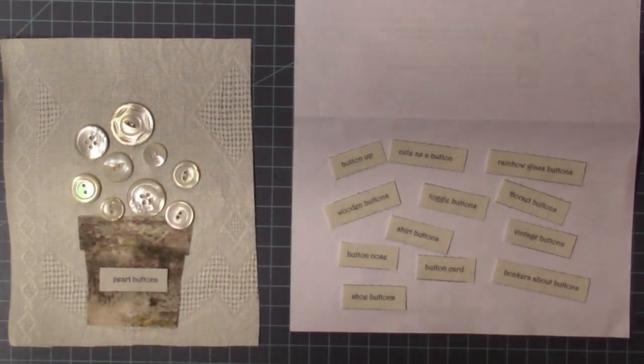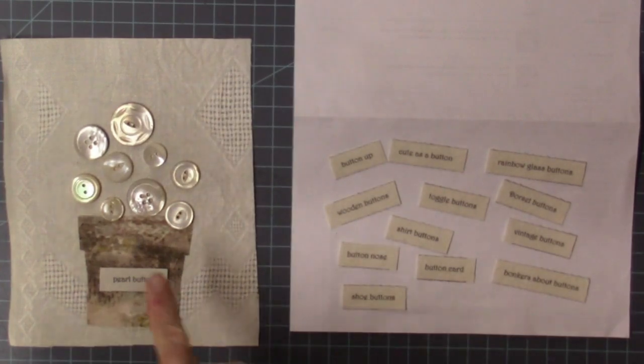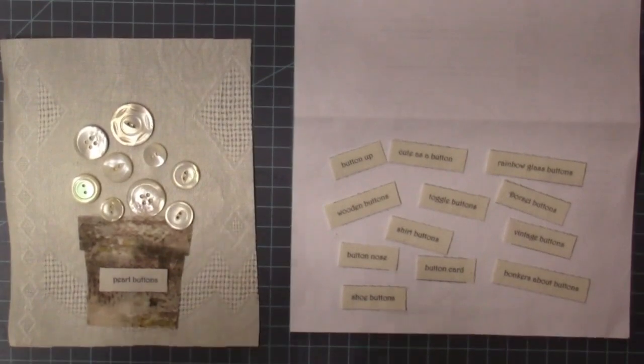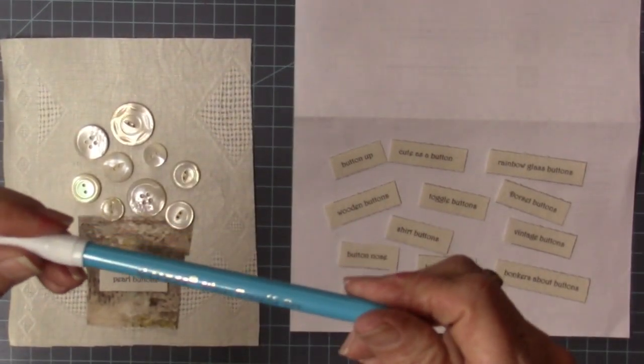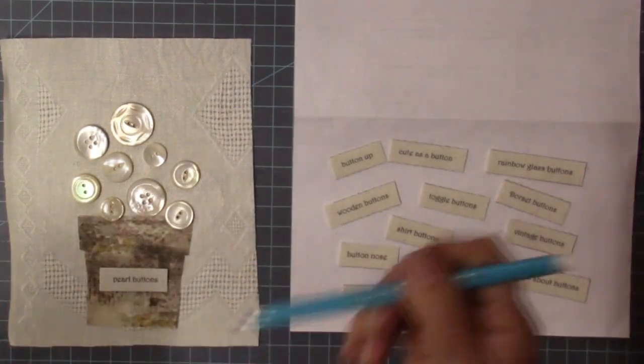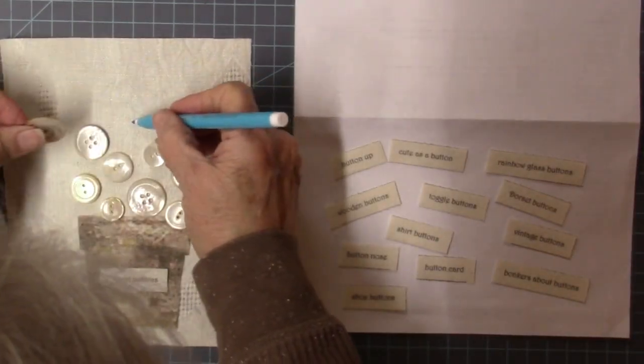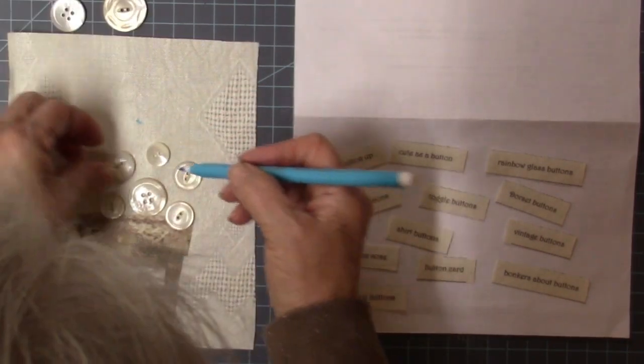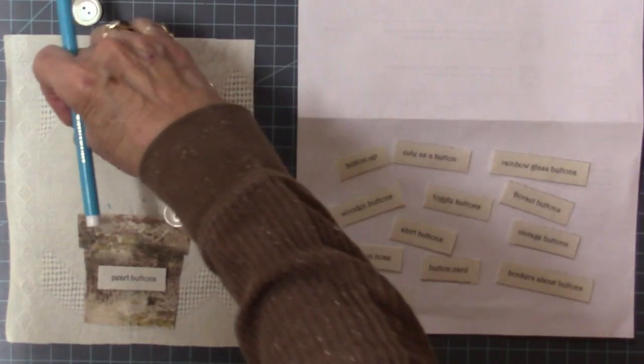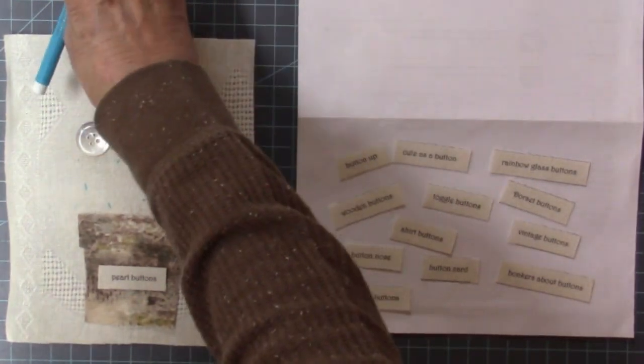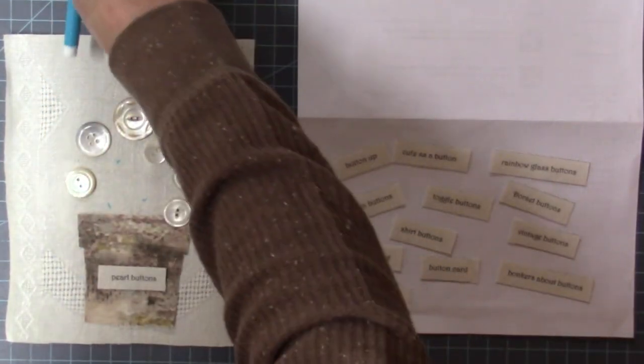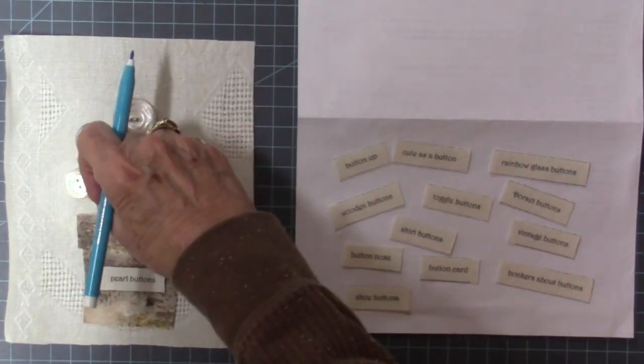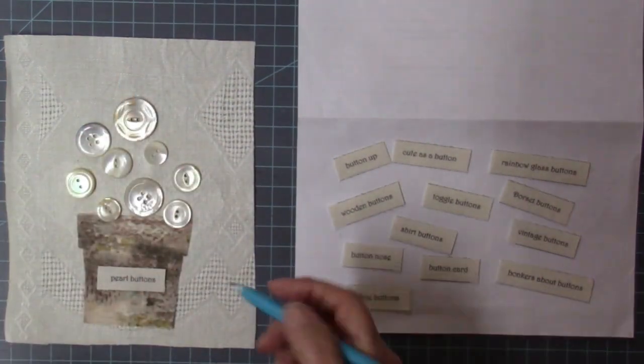So I am going to photograph this so that I can remember where my button placement is. I am going to, with this water erasable pen, go ahead and just mark where these buttons are going to go. If I didn't get them in exactly the right place, it wouldn't be like the end of the world, but sometimes whenever you have them all laid out the way you want them, big and small, on and off, in and out.